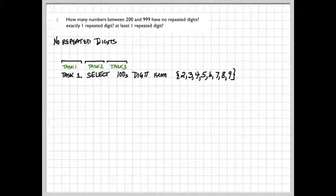We'll break this down into three tasks of selecting each digit in turn, and it's easiest if task one is to select the hundredth digit, because that's the one with restrictions on it. The hundredth digit has to be selected from the set of integers two, three, four, five, six, seven, eight, nine, in order for our number to be between 200 and 999. So there are eight choices for the hundredths digit.